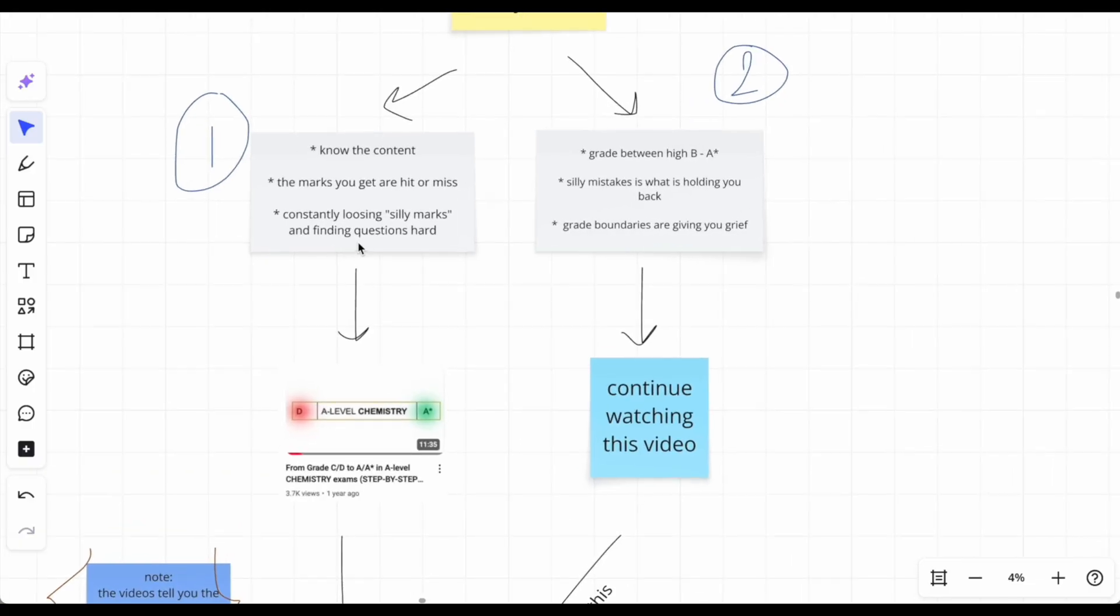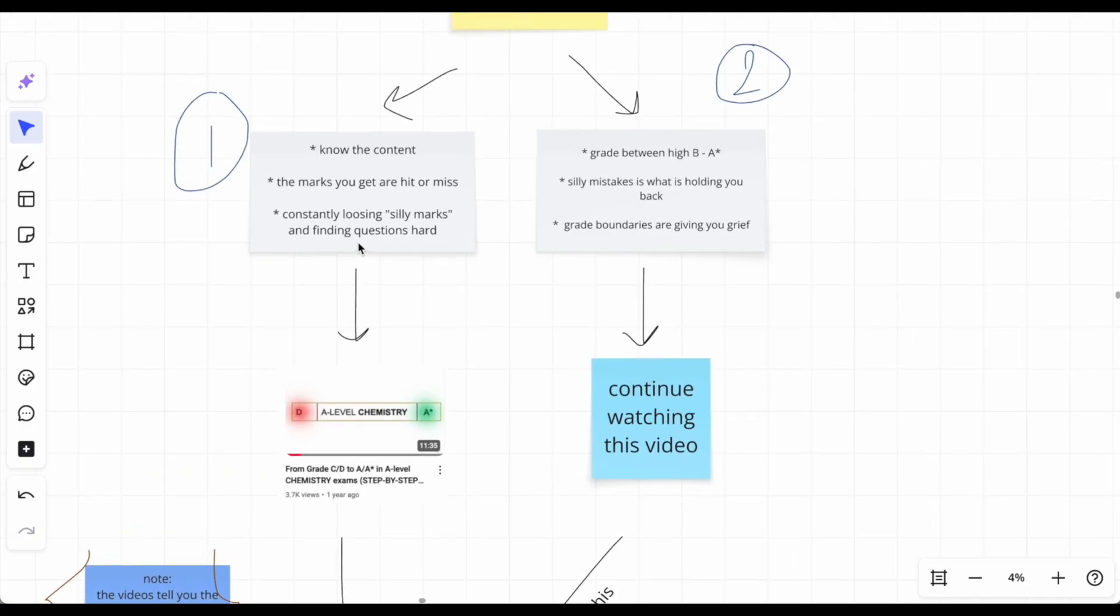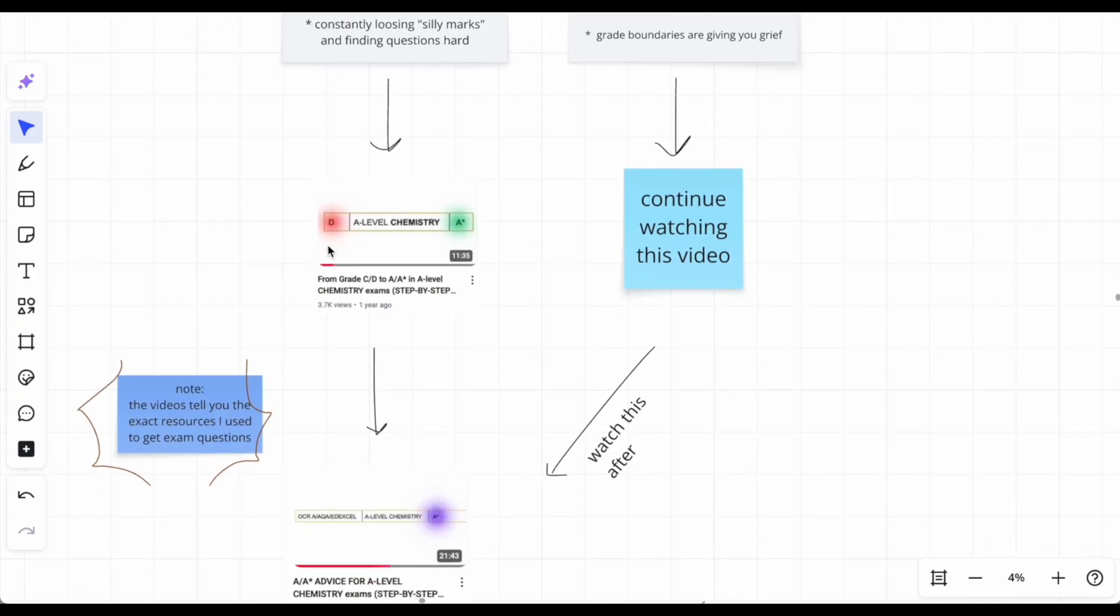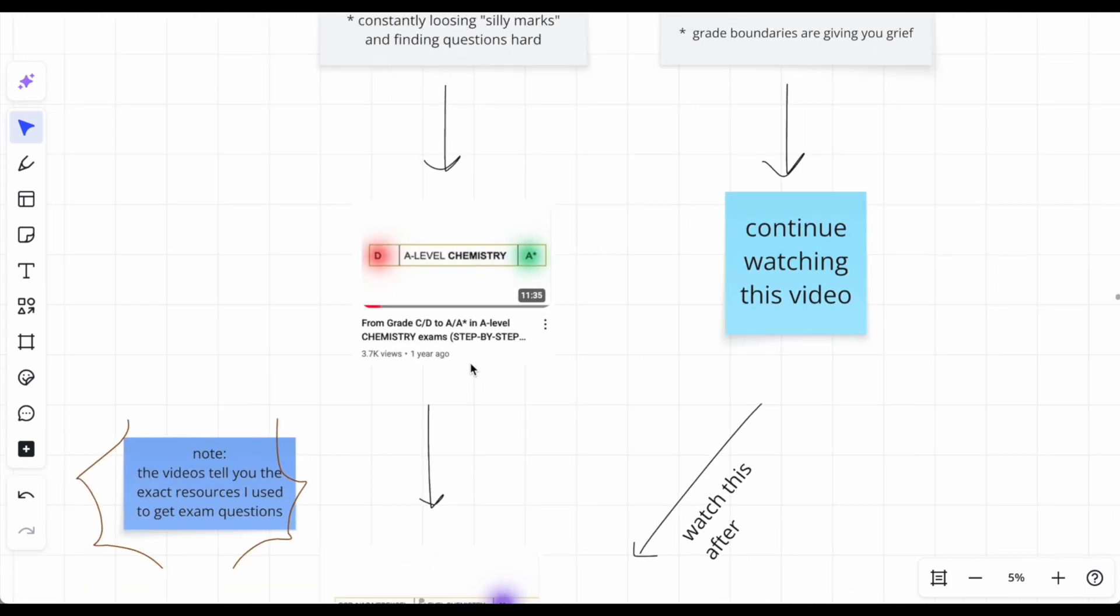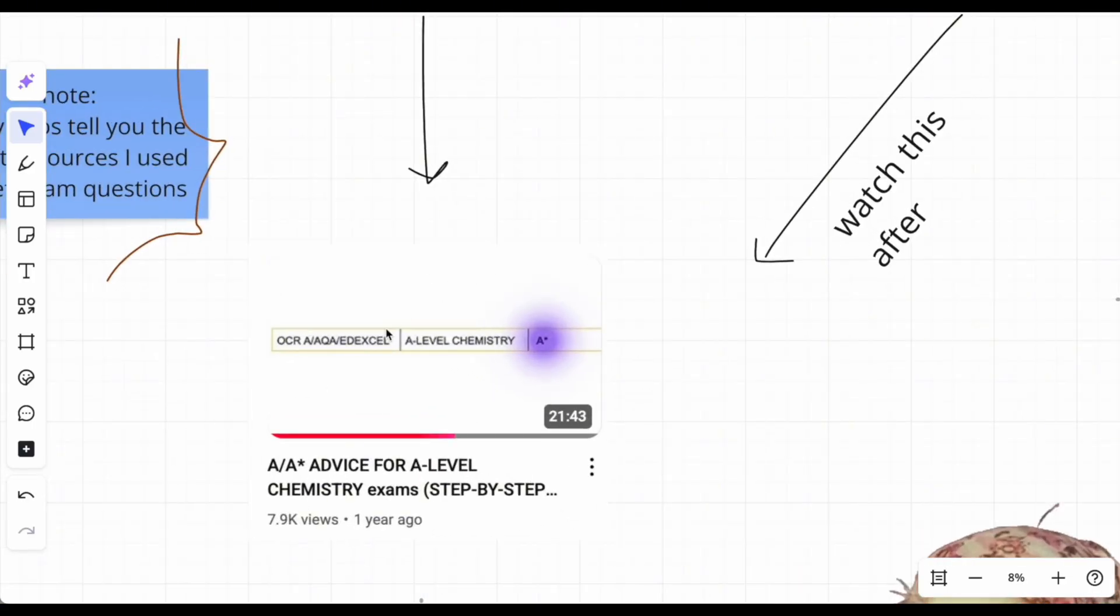Track one: you know the content but marks fluctuate. Some days you get them, some days you don't, constantly losing silly marks and finding questions hard. But are those actually silly mistakes or are you just saying that to feel better? That requires deep reflection. If you're on that track, watch this video right here - D to A*. I tell you everything you need to increase from a really low grade, then watch this one as well.